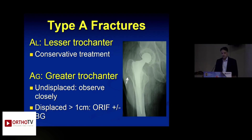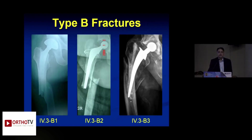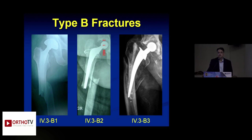Type A fractures, involving the lesser or greater trochanter, are generally undisplaced and can be treated conservatively with protected weight bearing, unless displacement exceeds one centimeter, in which case open reduction and fixation may be needed. Type B fractures create the most controversy. They are divided into three subtypes: B1 where the stem is well fixed, B2 where the stem is loose but bone mass is good, and B3 where the prosthesis is loose and bone stock is also poor.